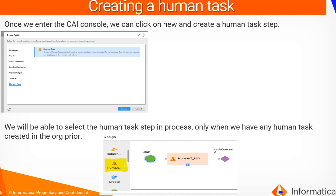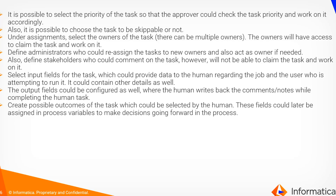While creating the task we can select the priority of the task so that the approver checks and takes the required action accordingly. We will also be able to select whether the task can be skipped or not, and select the owners, administrators, and stakeholders of the task. The owners of the task can take required action to approve, reject, or skip the task. Administrators, who can also act as owners, will be able to reassign the task to other owners. Stakeholders will not be able to take any action but will be able to comment on the task.